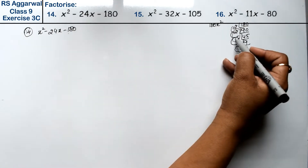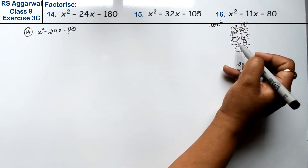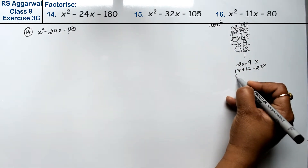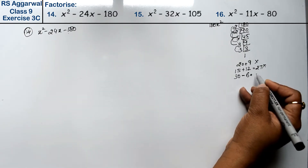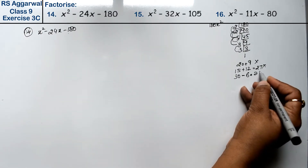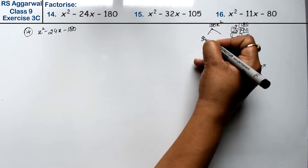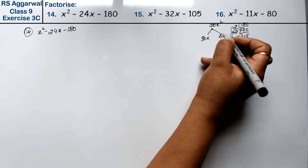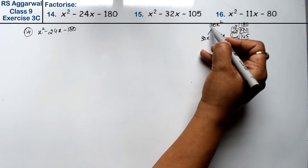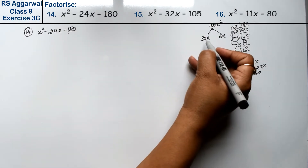5 twos are 10, 10 threes are 30 and 6. So we have 30 and 6. We need to make 24, and what we're getting is 30x and 6x. Here it is positive and here it is negative, so we are going to use minus.